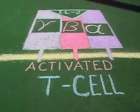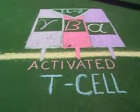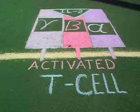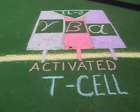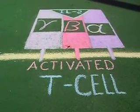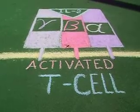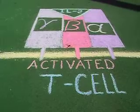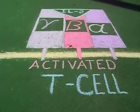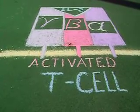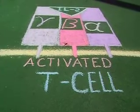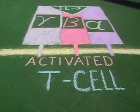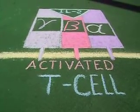Binding of interleukin-2 to the high affinity receptor then triggers progression through the rest of the cell cycle. T-cells activated in this way can divide two to three times a day for several days, allowing one cell to give rise to a clone composed of thousands of progeny that all bear the same receptor for antigen. Interleukin-2 also promotes the differentiation of these cells into armed effector T-cells.